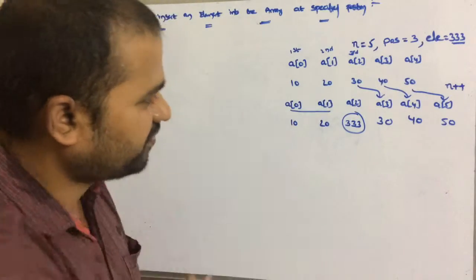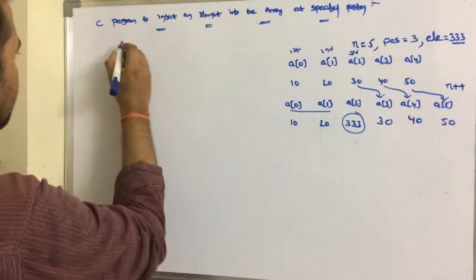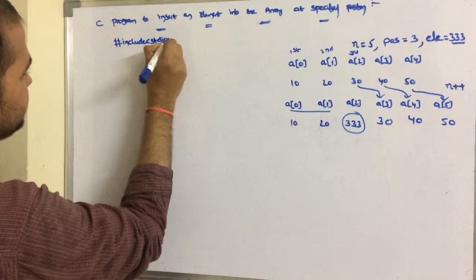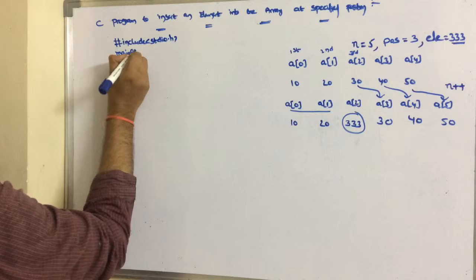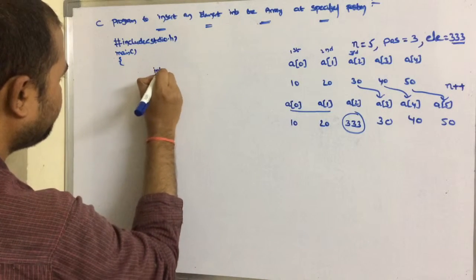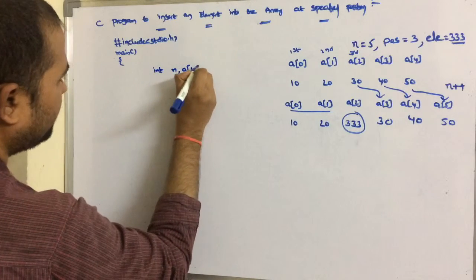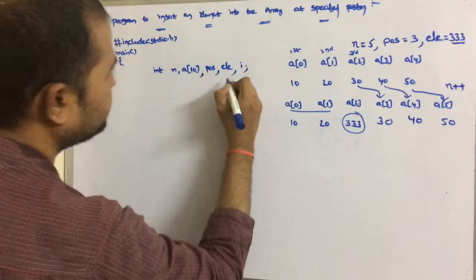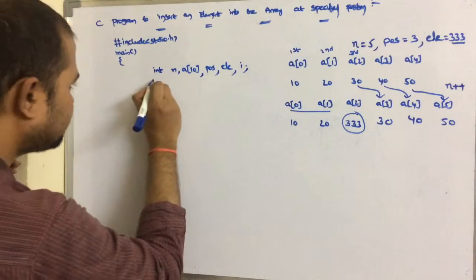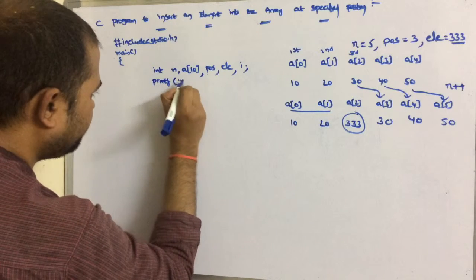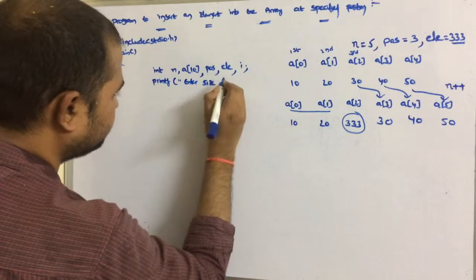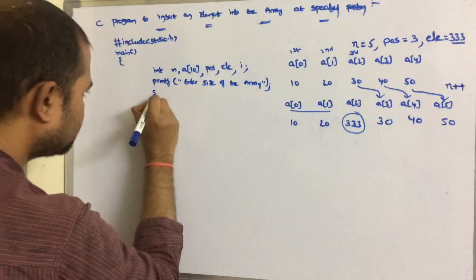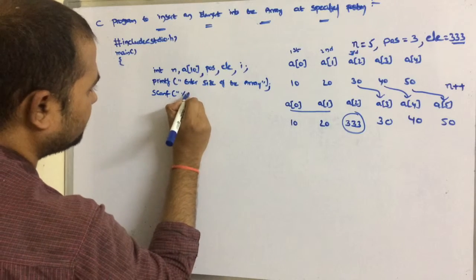Now let us write the program. The first statement is #include stdio.h, because we are using printf and scanf functions. C program execution starts from the main function. The input variables are n, a[10], position, ele, and i for the for loop. First, read the size of the array: printf enter size of the array, scanf %d ampersand n.